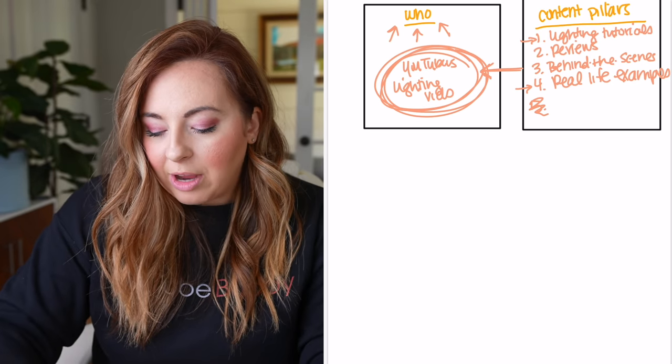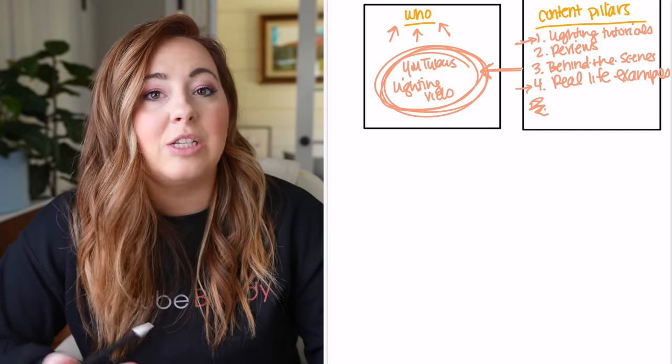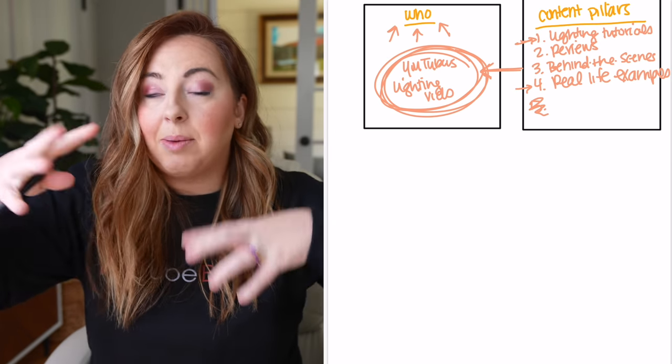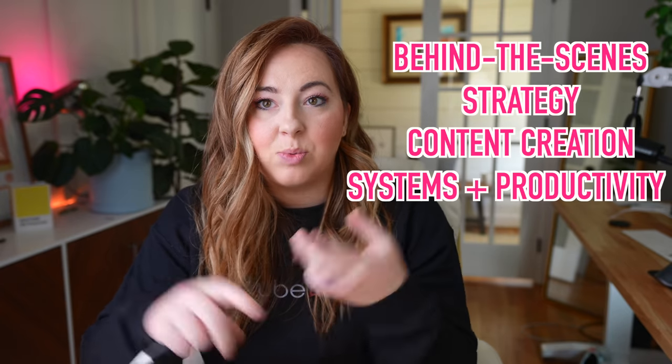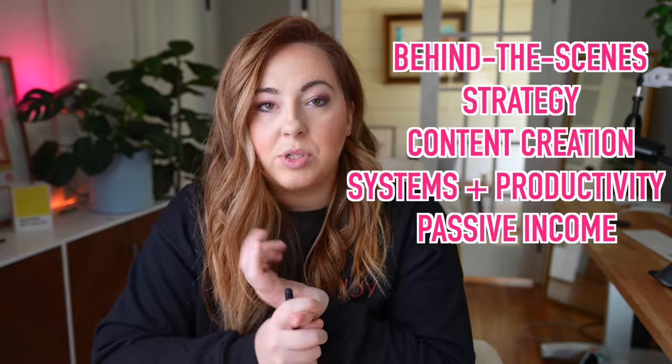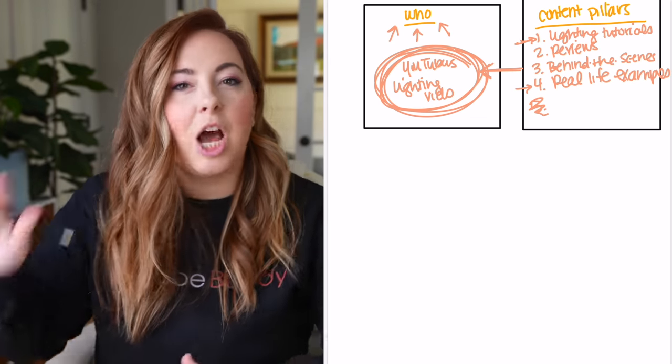So you've got to figure out your who, and you've got to figure out your content pillars. For me, I want to talk to entrepreneurs who want to create content that sells their one-to-many passive product. My content pillars are behind-the-scenes content, strategy, content creation, productivity and systems — which are one pillar — and passive income. When I'm thinking about creating content, I'm thinking about those pillars. I'm not constantly only going to do how-to videos or only passive income videos; I want to broaden my horizon while keeping the same who in mind.